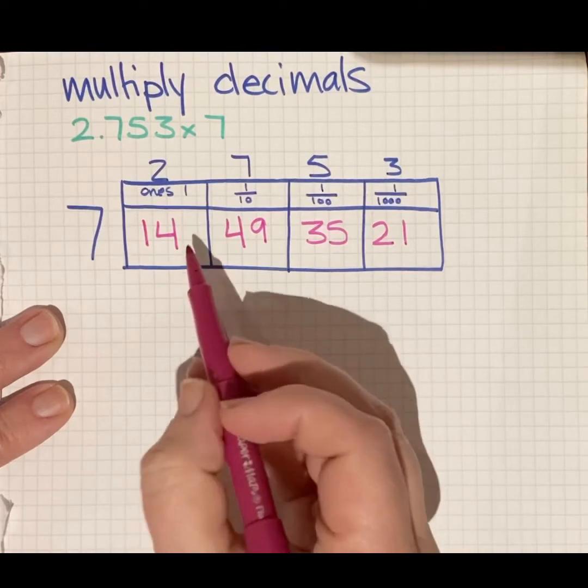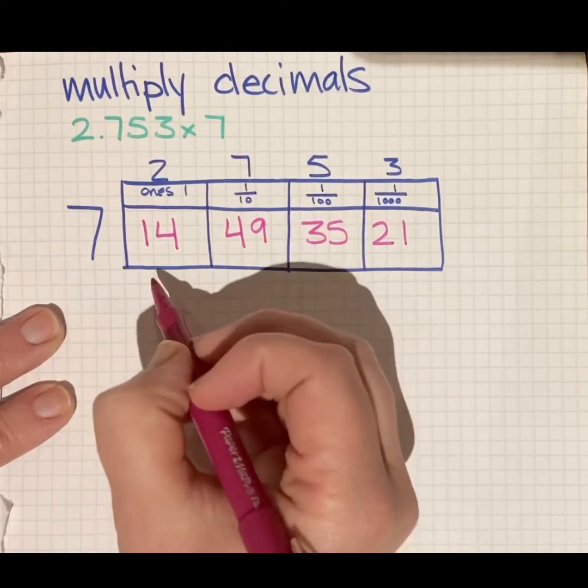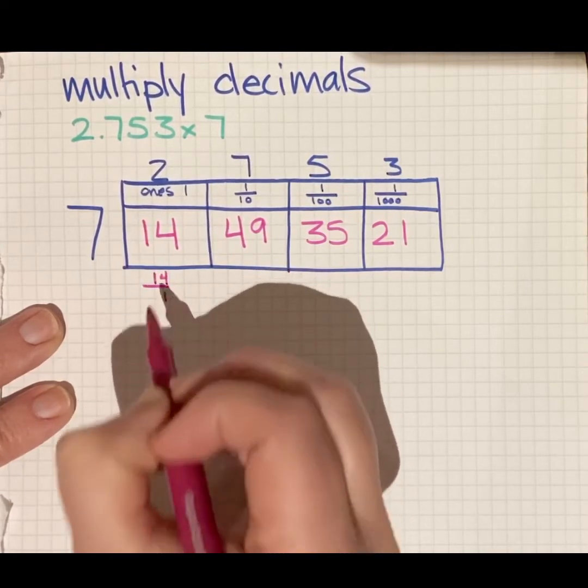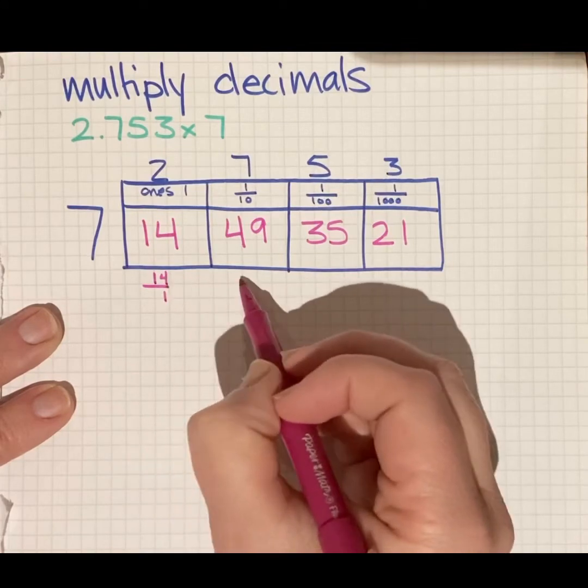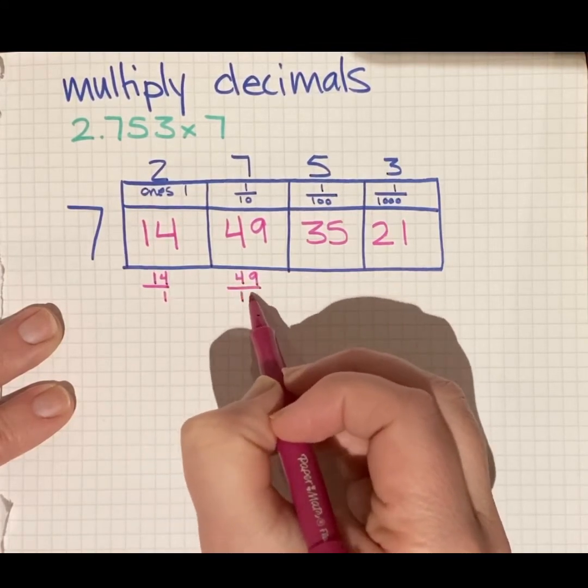Now I want to be really clear how I write this and I don't want to forget my place value. So I'm going to keep with my fraction theme to keep it really clear. And I'm lining it up. Watch how I do this. I have 14 ones. My one is under the ones column in the numerator and denominator.